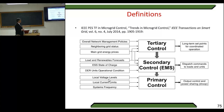The framework uses a three-level European concept: primary, secondary, and tertiary control, with different inputs. The results include long-term set points for coordinated operation, dispatch commands to loads and units, and in primary control, output control on power sharing. This is the general view from the 2014 paper.